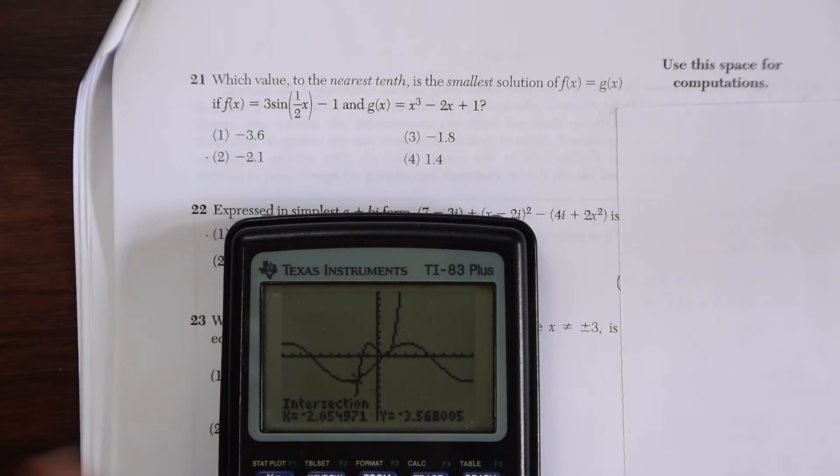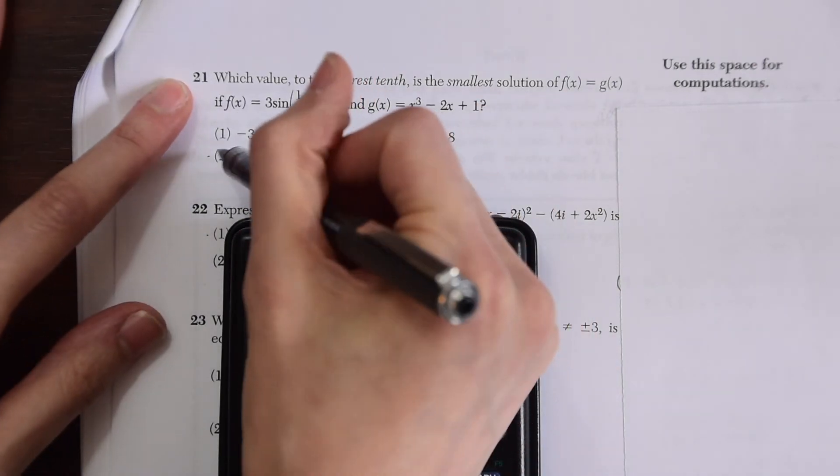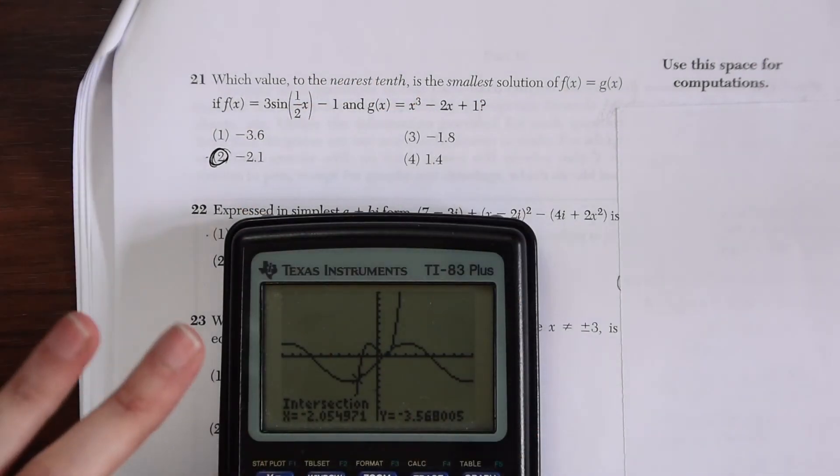Remember we want to round it to the nearest tenth. So negative 2.05, if you round it, the nearest tenth is negative 2.1, which is choice 2. And that's our answer.